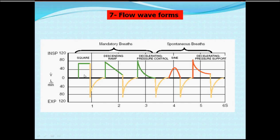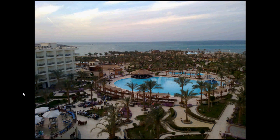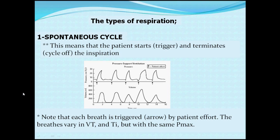Regarding flow waveforms: in volume-controlled ventilation the flow waveform is square, while in pressure-controlled ventilation it is descending or decelerating. There is a meaningful difference between these waveforms regarding alveolar inflation and oxygenation — a decelerating waveform is generally more beneficial.